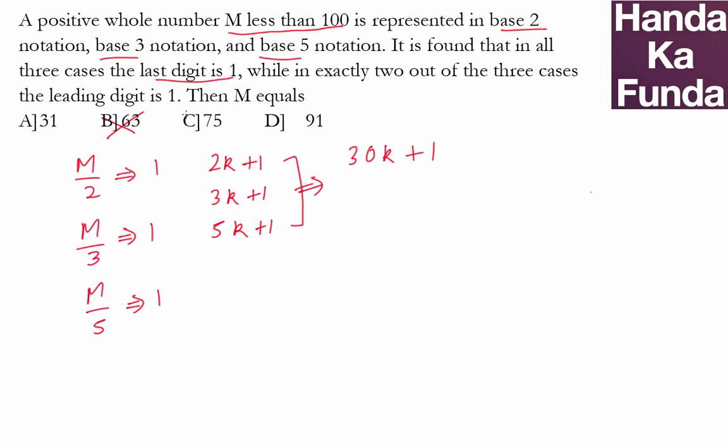Two of the options are already eliminated. Either my answer is 31 or my answer is 91. It is found that in all three cases, the last digit is 1 which has eliminated two options. Now, in exactly two of the three cases, the leading digit is 1.